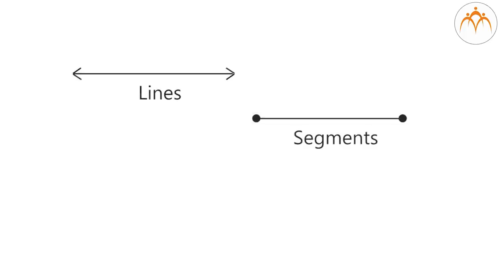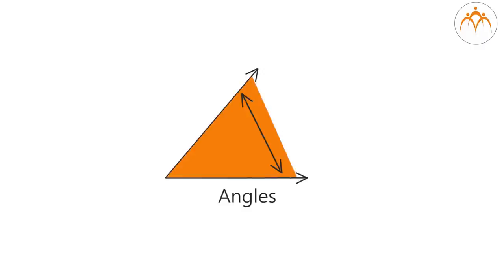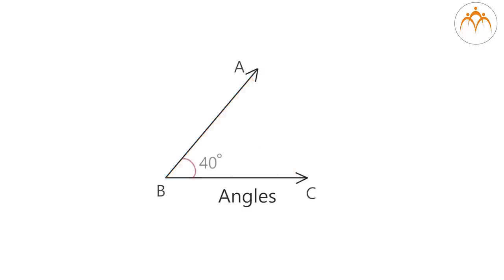We have studied lines, segments, and angles in the previous class. We measure an angle in degrees. Suppose angle ABC has a measurement of 40 degrees, then we write it as angle ABC equal to 40 degrees.